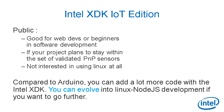Intel XDK is great if you like JavaScript or web development and don't really like other languages. If you already know Intel XDK for web development, that's also perfect. If you plan to stay within the boundaries of the validated plug-and-play sensor kit, that's great. But if you want to plug any sensor or any Bluetooth device, it may not be good enough. It's also great if you're not interested in the Linux side of Edison and Galileo. Compared to Arduino, you can add a lot more code with Intel XDK — it is real software development — and you can evolve into Linux Node.js development if you want to go further.